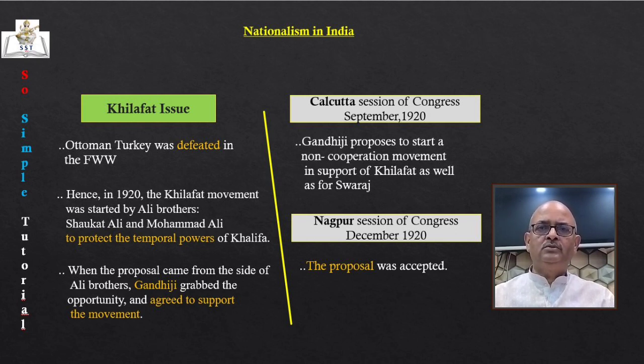They believed that Gandhi Raj was coming and everybody would be given land in their villages. They imagined Swaraj as a time when all their sufferings would be over. When news of Swaraj and the non-cooperation movement spread to the plantations, many workers began to defy their authorities, left plantations and headed towards their homes. But they were stranded on the way due to railway and steamer strikes, caught by police and brutally beaten up.